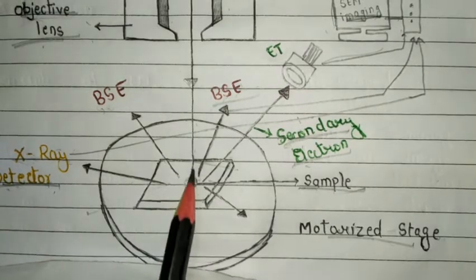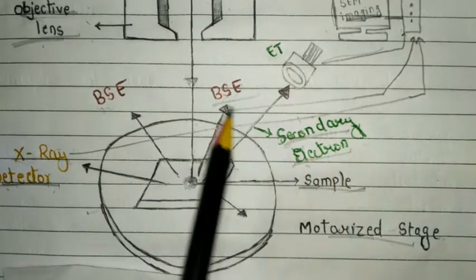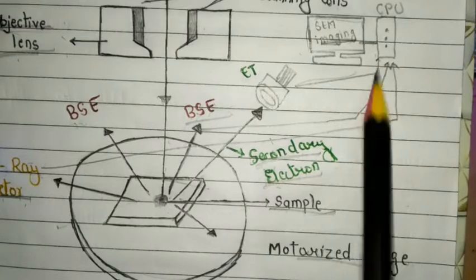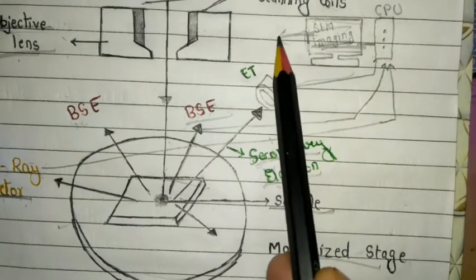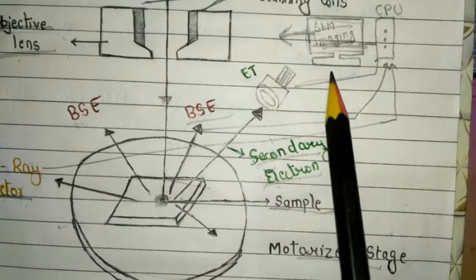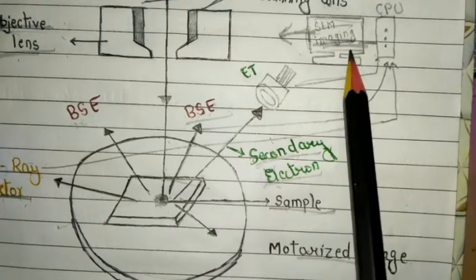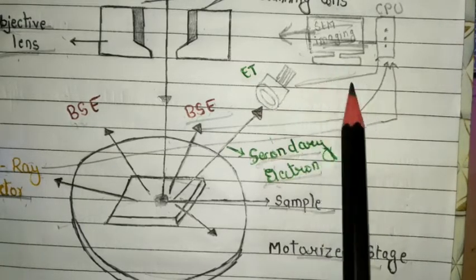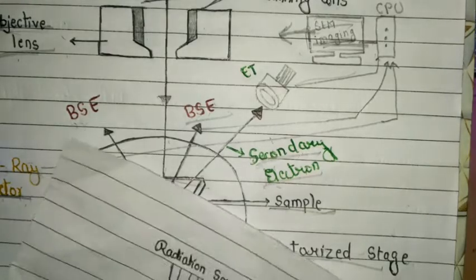The electron beam is bombarded onto the sample and three types of signals are detected: secondary electrons, backscattered electrons, and X-rays. When these three signals are processed by the CPU, we get the SEM image. This is the final product of the SEM instrument. The image has high resolution and is magnified. We generally use optical microscopes, but when higher resolution and magnified images are required, we use scanning electron microscope.